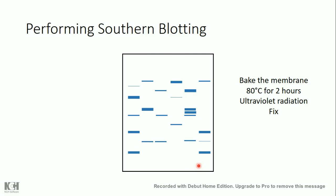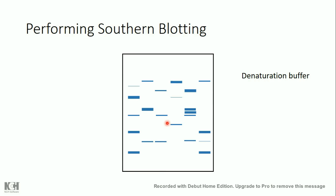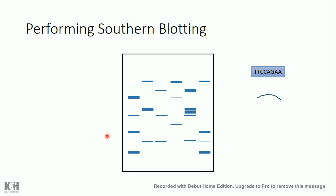If I apply the probe — which is complementary to the sequence of interest — the probe cannot bind to this sequence because it is double-stranded. So I should treat the membrane with a denaturation buffer to disrupt the hydrogen bonds between the two strands of DNA and separate them. After treating with the denaturation buffer, all the DNA sequences on the membrane will be single-stranded and ready for probe binding.